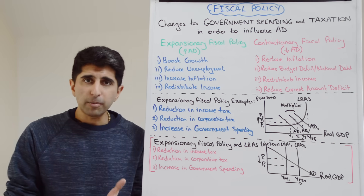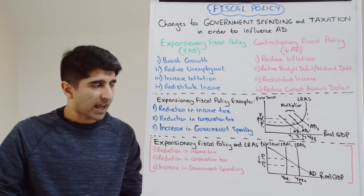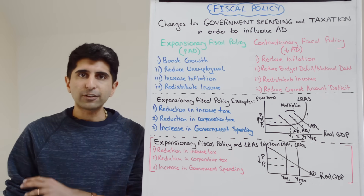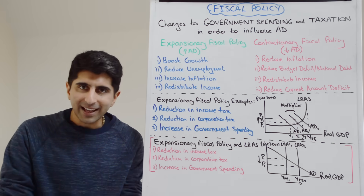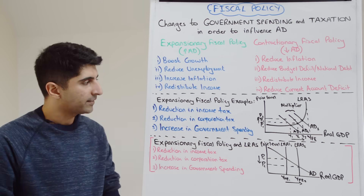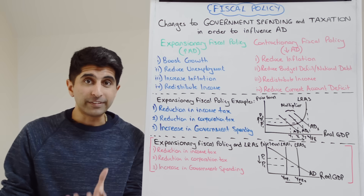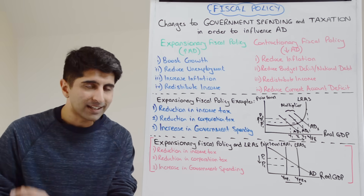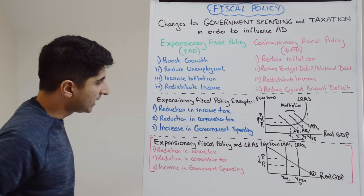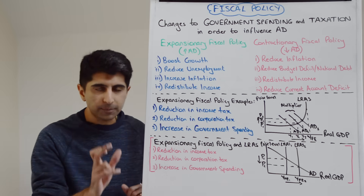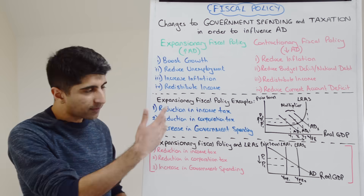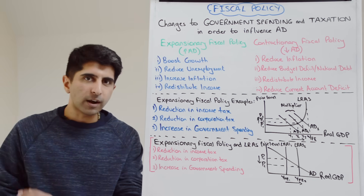We could see a reduction in corporation tax — a different tax that might be cut. Corporation tax is a tax on business profit, so if corporation tax is cut, that's going to increase retained profit for businesses. That could increase their marginal propensity to invest, increase investment in the AD equation and boost AD that way. We could also see a reduction in regressive taxation — for example, a reduction in VAT.